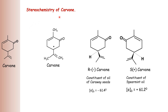Let us see the stereochemistry of carvone. In carvone, one carbon atom is an asymmetric or chiral carbon atom. Therefore two stereoisomers are possible: R-carvone and S-carvone. R-levo-carvone is a constituent of oil of caraway seeds with an angle of rotation of minus 61.4 degrees, while dextro-carvone has an angle of rotation of plus 61.2 degrees and it is the constituent of spearmint oil. This is the stereochemistry of carvone.